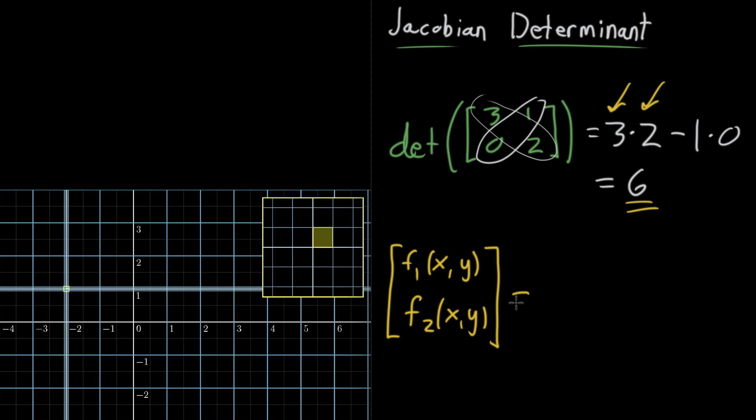And the function that I was looking at, that we were analyzing to learn about the Jacobian, had the first component x plus sine of y, and the second component was y plus the sine of x.